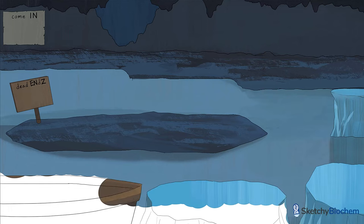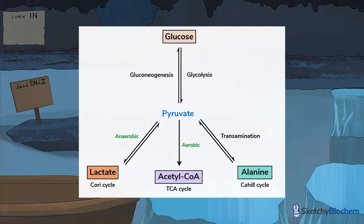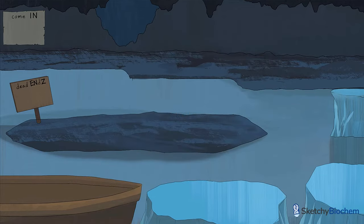Why do we need to know about glycolysis? Well, the end product of glycolysis is pyruvate, a three-carbon molecule that feeds into a number of important pathways depending on energy needs and whether oxygen is present. Please check out our Fates of Pyruvate sketch to learn more.